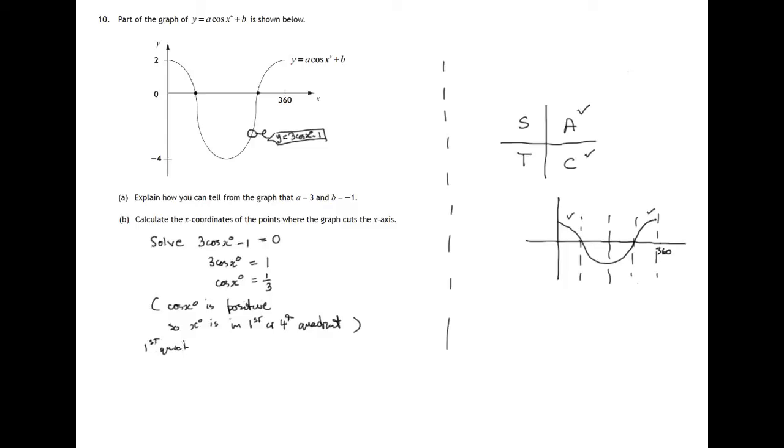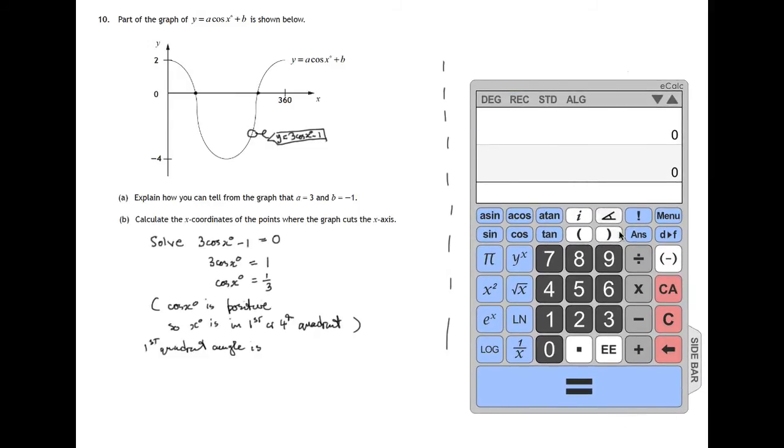The first quadrant angle is the angle whose cosine is 1 third. The angle whose cosine, that's cos to the minus 1 in most calculators. So in this calculator, it's acos, arc cos, that's called.